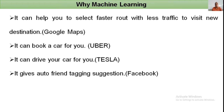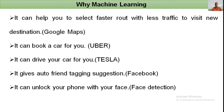Machine learning gives automatic friend tagging suggestions in Facebook. If you upload a group photo and your friend is present in it, Facebook immediately suggests whether you want to tag your friend. Machine learning also enables face detection to lock and unlock your phone, helping maintain privacy using only your face.